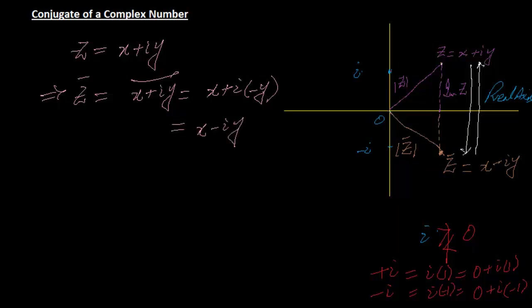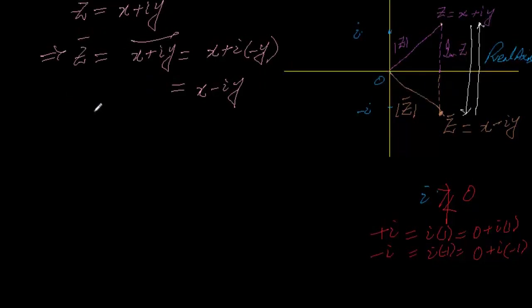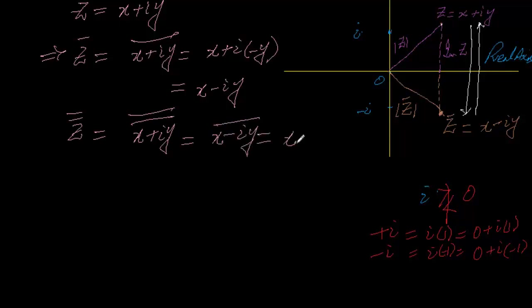Then, plus iota minus iota is not going to be imaginary part. So here we see double conjugate, what will happen? X plus iota Y double conjugate. First conjugate apply, X minus iota Y, then conjugate apply, X plus iota Y, which is original Z, the given complex number.